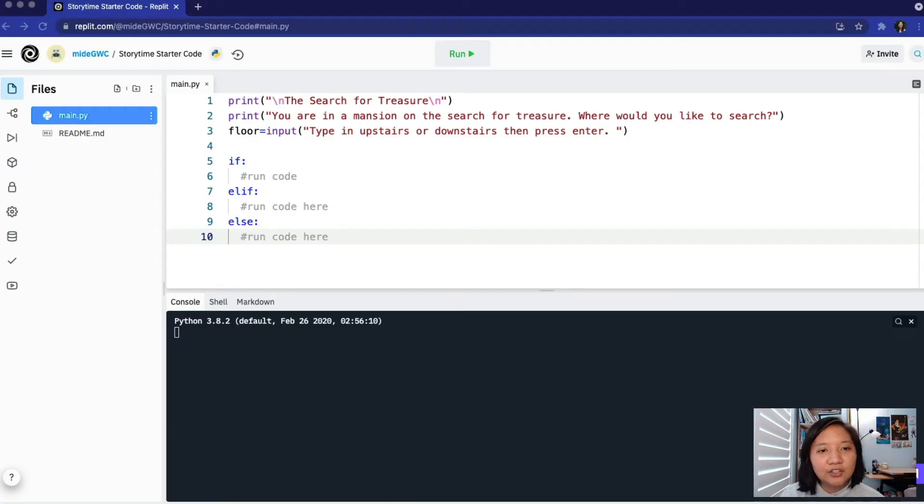Let's take a look at our code and write our conditions using boolean statements. To review, we are taking user input and storing it into the variable floor. The user should type in either upstairs or downstairs. First, we want to check if floor is equal to upstairs.